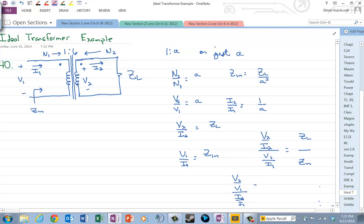I2 over I1. Well, V2 over V1 is A. I2 over I1 is 1 over A. So this is equal to A squared.